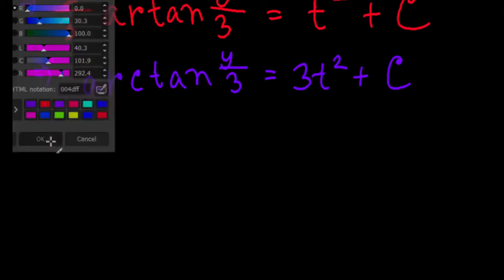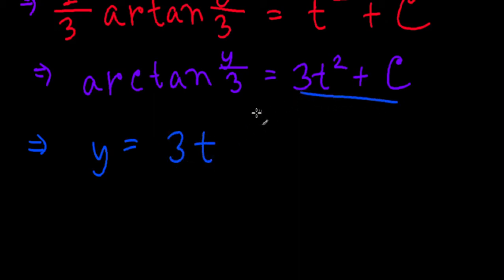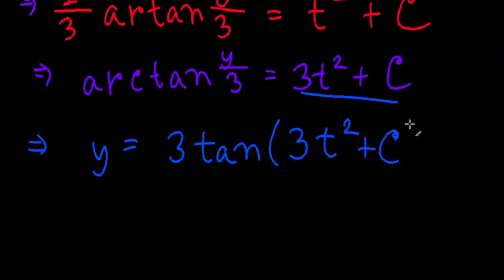This is our implicit solution. For the explicit form, take the tangent of both sides — the arctan disappears — then multiply by 3: y = 3·tan(3t² + c). This is the explicit particular solution.